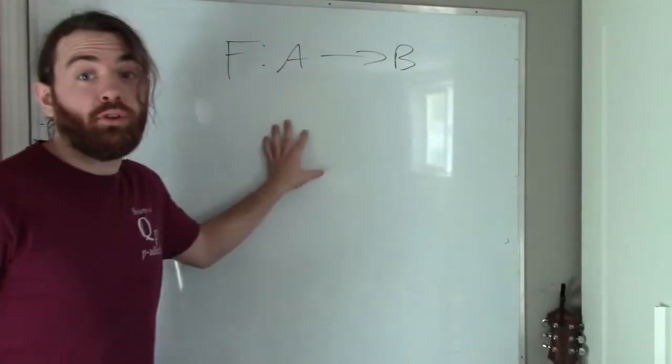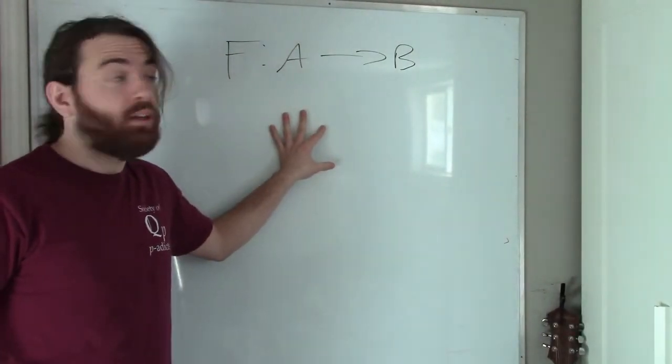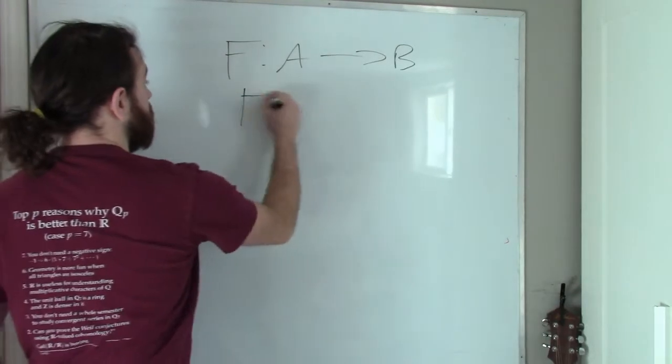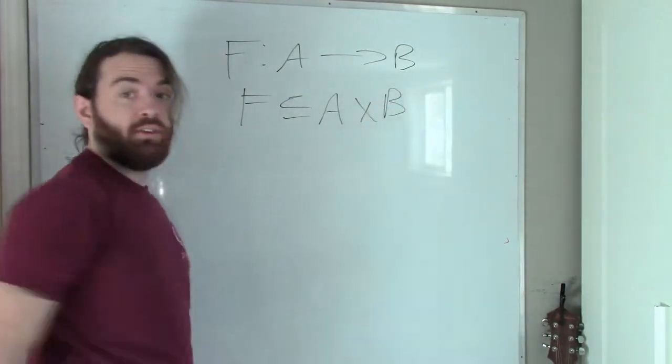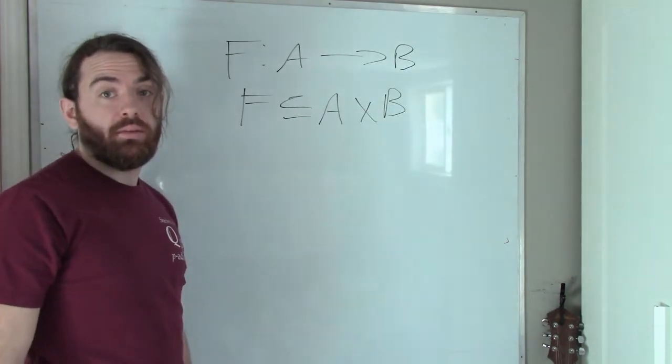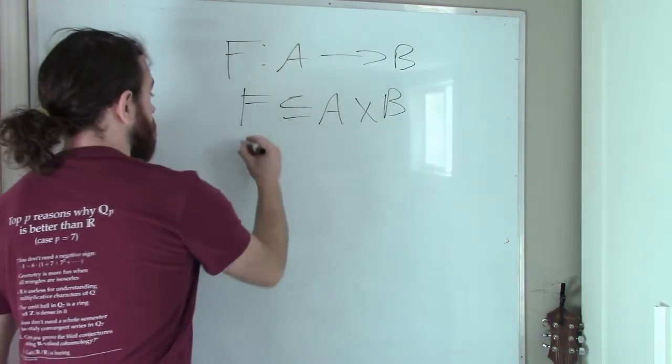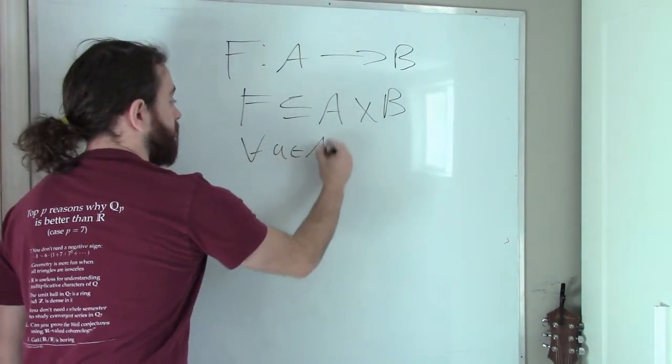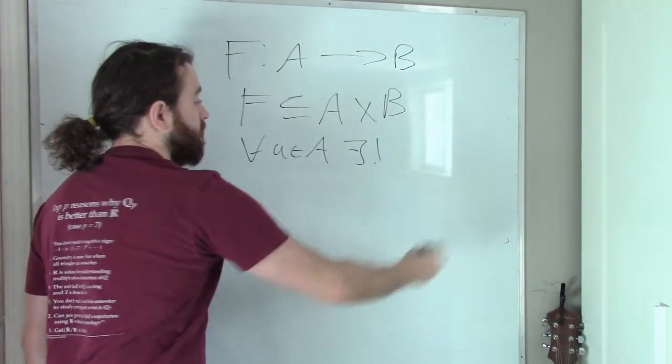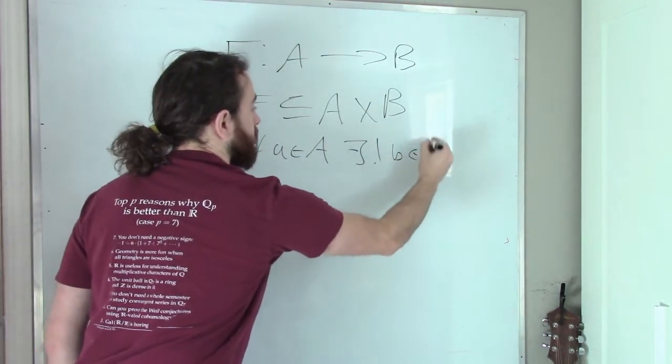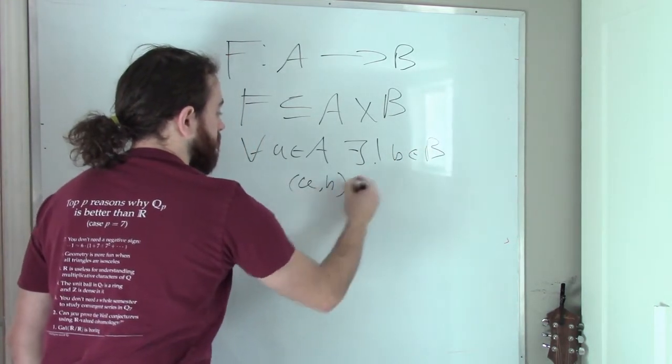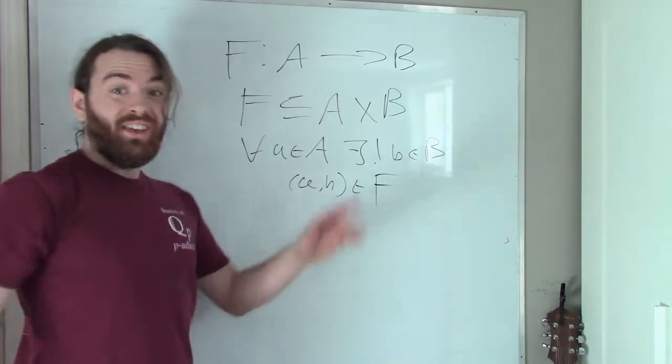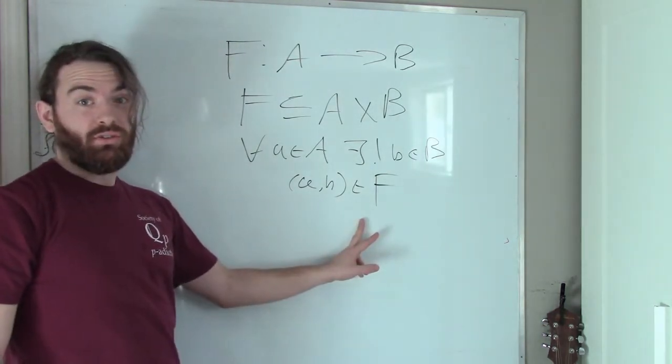A function between two sets A and B is just a subset of the Cartesian product of the two sets A and B, such that for all elements A in A, there exists a unique element B in B, where A, B is in this subset F. That is what a function is, right?